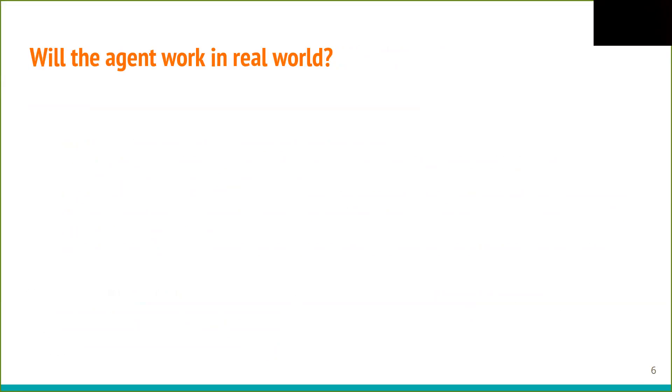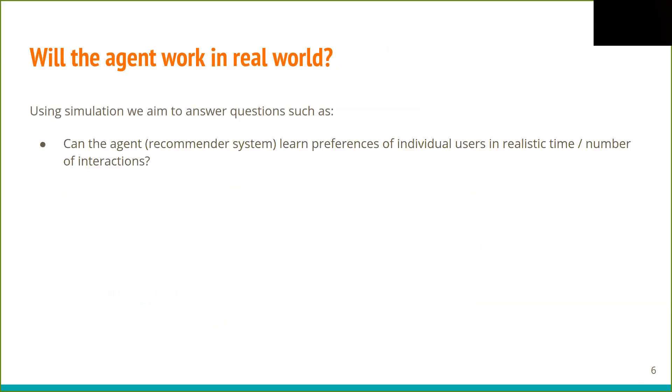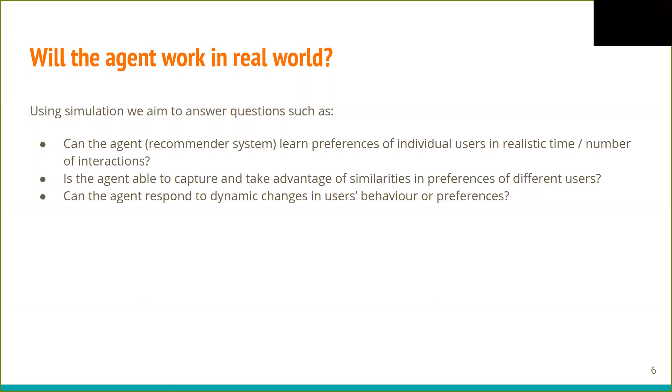Of course, we cannot be sure about this. However, if the agent fails in the simulation environment, it will almost certainly fail in the real world. Our goal is to answer questions such as, can the agent actually learn preferences of individual users in realistic time before users lose interest in the system? Or whether it can exploit similarities in preferences between users to speed up the learning process? Whether it can respond to dynamic changes in user behavior or preferences? Or how sensitive it is to incomplete information about relevant context or user characteristics? Which is very often the case due to technical limitations or privacy concerns?